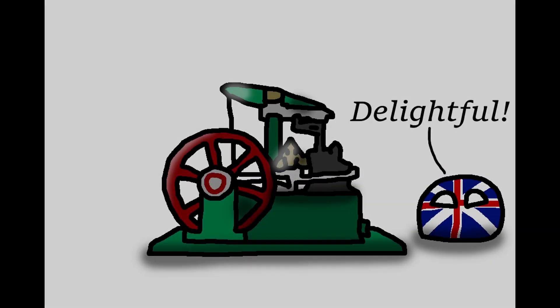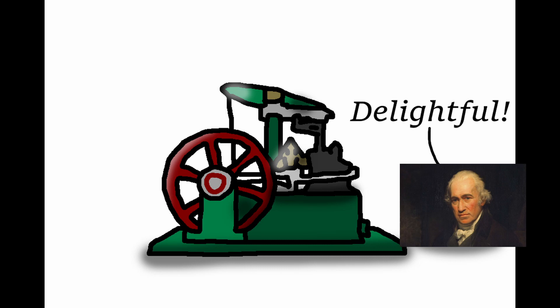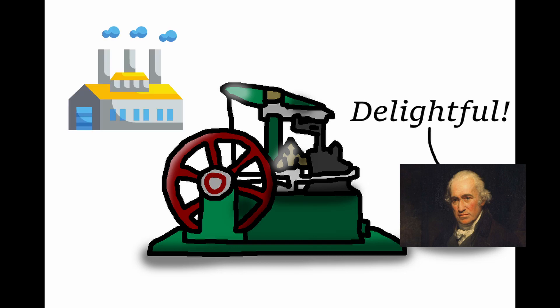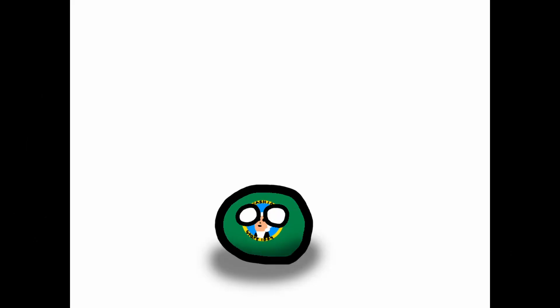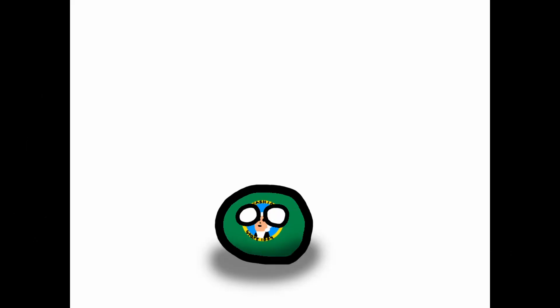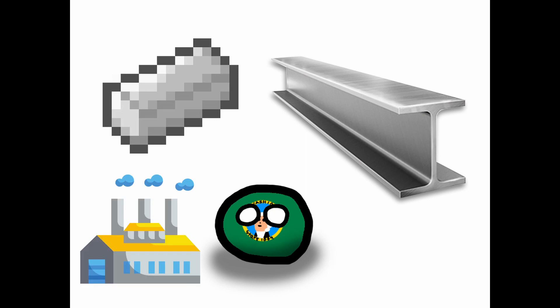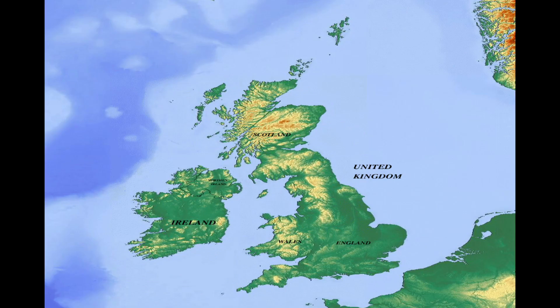The steam engine, developed by James Watt in the late 18th century, was a key invention that transformed the way people lived and worked. It powered machines and factories, allowed for the mechanization of transportation, and enabled the development of new industries, such as iron and steel production. With the steam engine, factories could be located anywhere, rather than being limited to water sources for power.